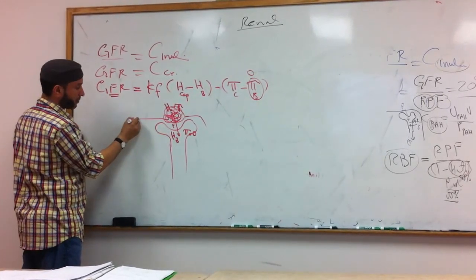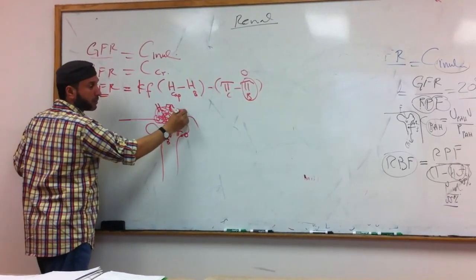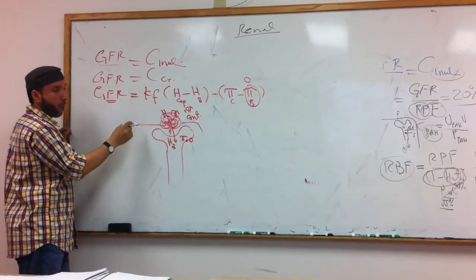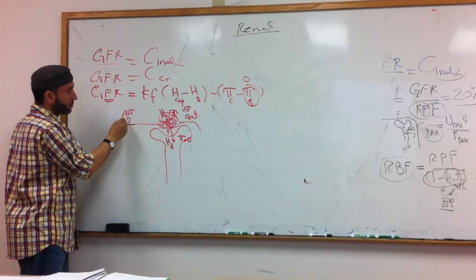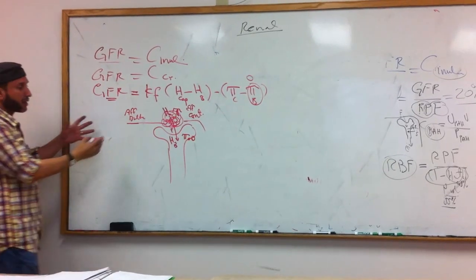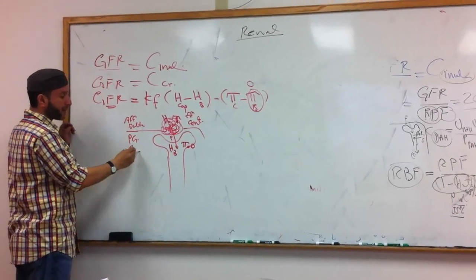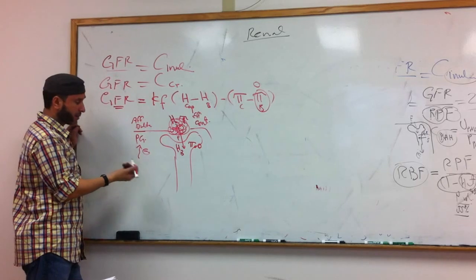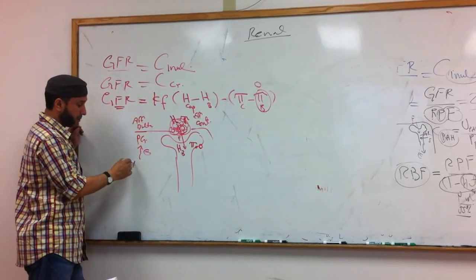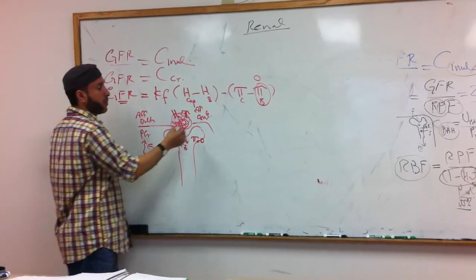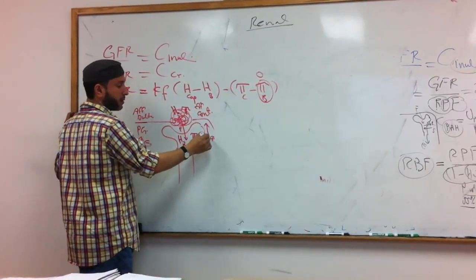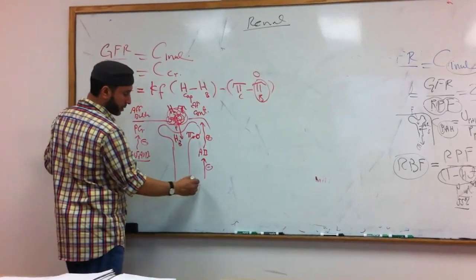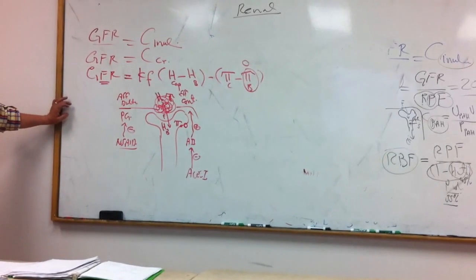To increase the hydrostatic pressure, we're going to constrict the efferent and dilate the afferent. We can dilate the afferent by inhibiting prostaglandins. Which medication inhibits prostaglandins? NSAIDs. And which one inhibits angiotensin II? Also relevant here — NSAIDs are the medication that affects this pathway.